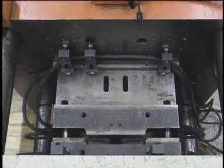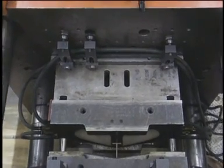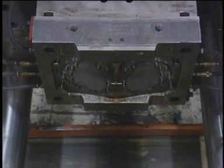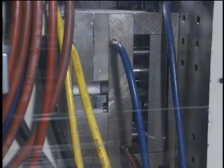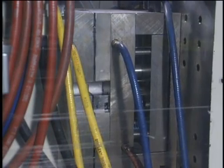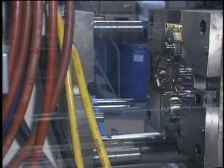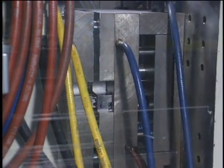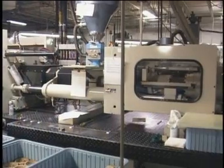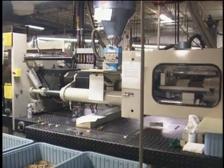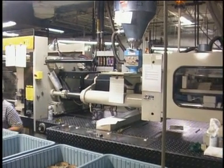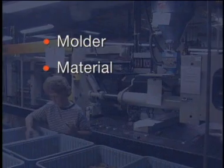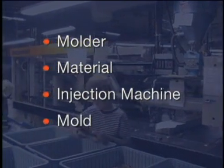Injection molding plastics is extremely complicated because of the infinitely changing pressure, temperature, and velocity inside the mold. These molding conditions directly affect the properties of each molded part. A change in any of the conditions will alter the parts produced. There are four primary elements that influence the plastic injection molding process: the molder, the material, the injection machine, and the mold.